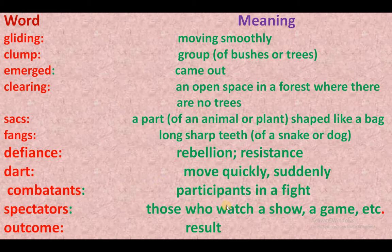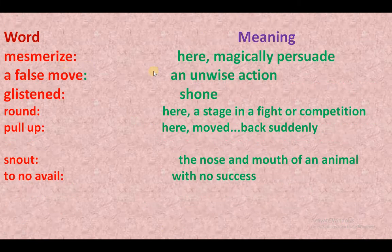Combatants — participants in a fight; ladai mein bhaag lene wale. Spectators — those who watch a show, a game, etc. Outcome — result. Mesmerize — here, to magically pursue; magical roop se kisi ko bharmit karna.